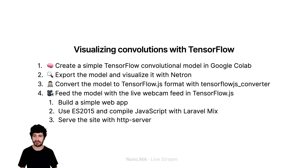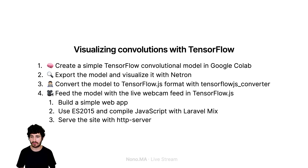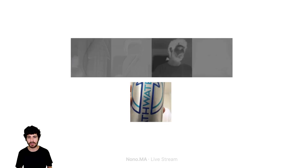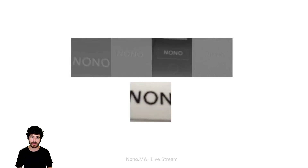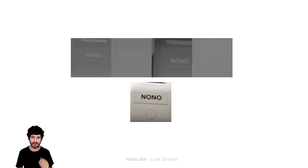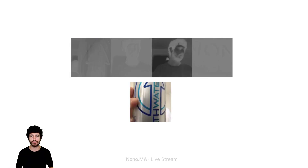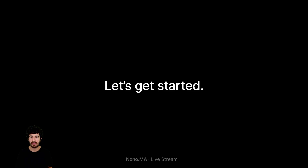We will convert the model to TensorFlow.js with the TensorFlow.js converter, which can be used both on the command line or as a library inside a notebook or Python code. We'll feed the model with the live webcam feed in TensorFlow.js. This is just a simple application served with a static website using HTTP server, an NPM package. We'll use JavaScript with ES2015 syntax, transpiled with Laravel Mix to run in the browser, with simple HTML5. So as I move on the webcam, the kernels of the convolution — the different filters — are visualized there. So that's it. Let's get coding.